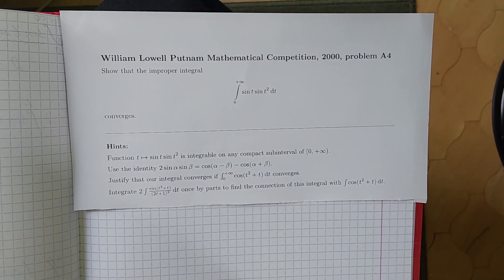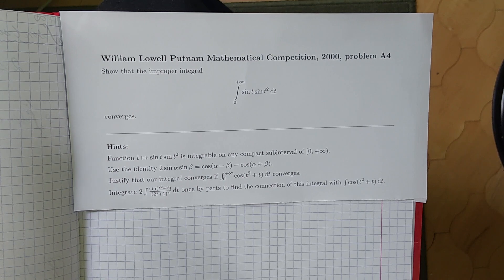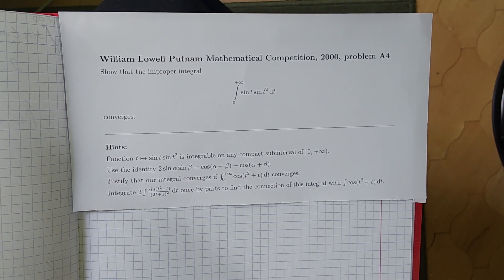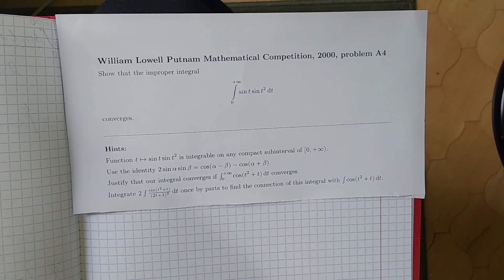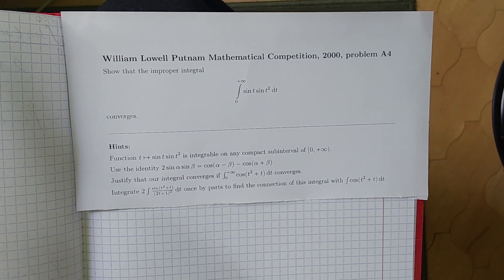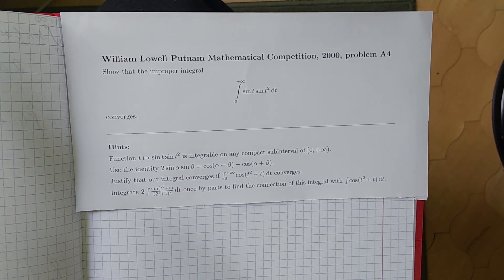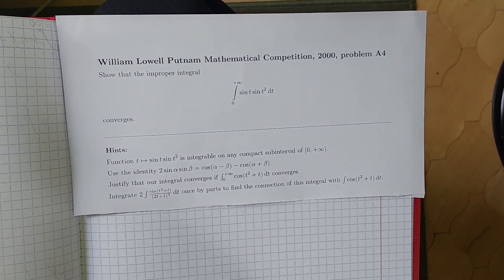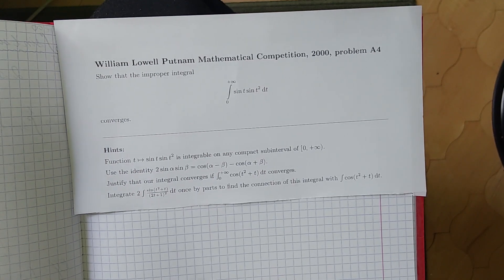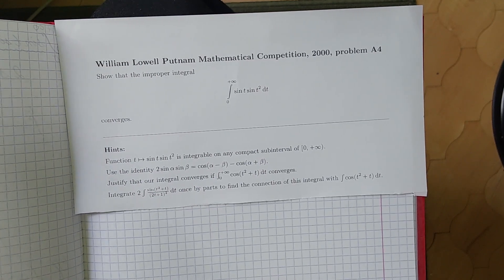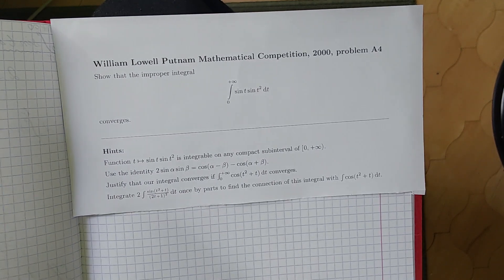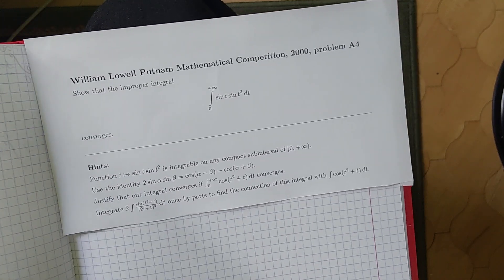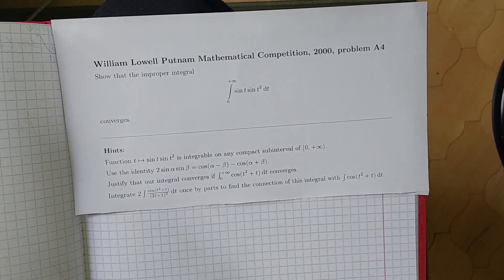Use the identity 2 sine of alpha times sine of beta equals cosine of alpha minus beta minus cosine of alpha plus beta. After doing that, you should be able to justify that our integral converges if the integral from 0 to infinity of cosine of t squared plus t dt converges.